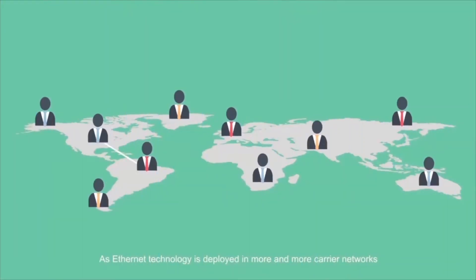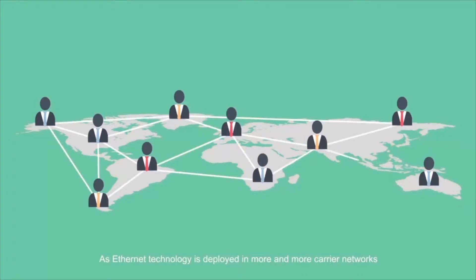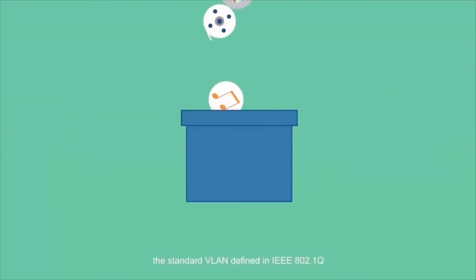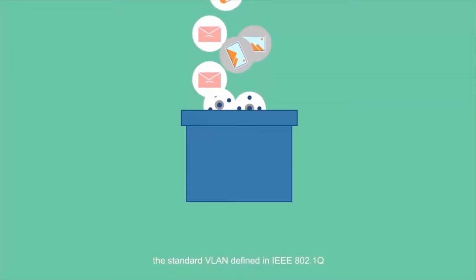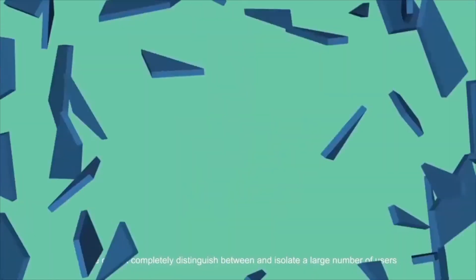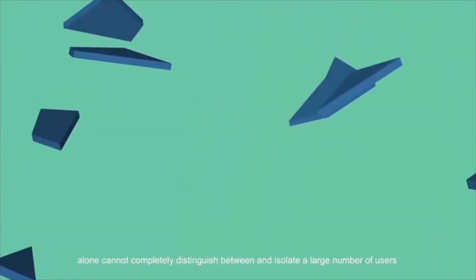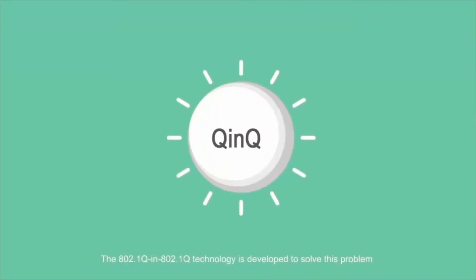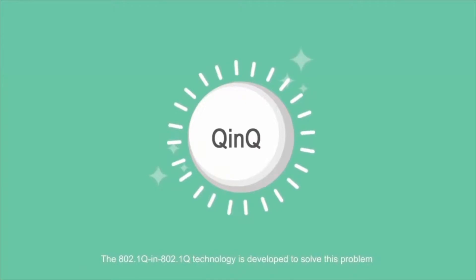As Ethernet technology is deployed in more and more carrier networks, the standard VLAN defined in IEEE 802.1Q alone cannot completely distinguish between and isolate a large number of users. The 802.1Q in 802.1Q technology is developed to solve this problem.